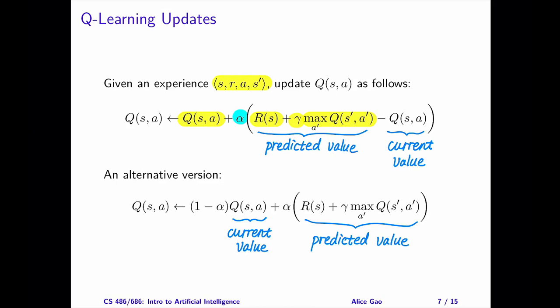If alpha is large, the predicted value has more weight and we're potentially making a large change. On the other hand, if alpha is small, the current value has more weight and we're likely making a small change.